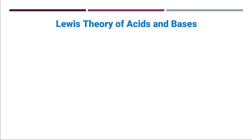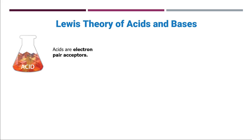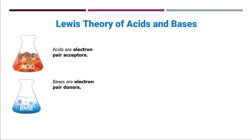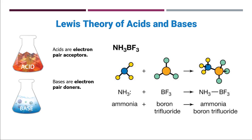The Lewis theory of acids and bases states that an acid is an electron pair acceptor and a base is an electron pair donor. In the reaction of ammonia with boron trifluoride, you can see that ammonia has a lone pair. Looking closely at the picture, the N is nitrogen, shown in the blue circle.